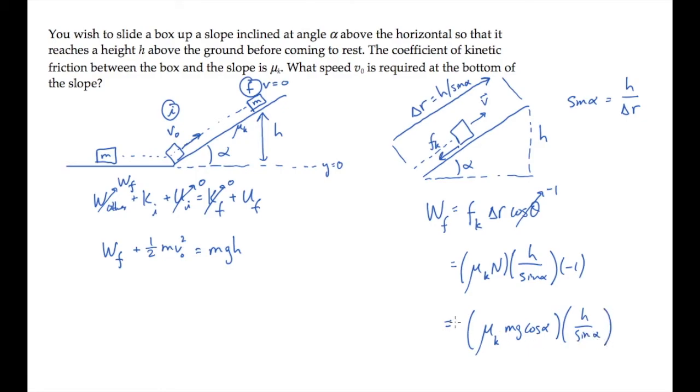Substitute all of these results and simplify to see that the work done by friction is negative, it's tending to slow the box down, mu sub k times mgh over tangent alpha.